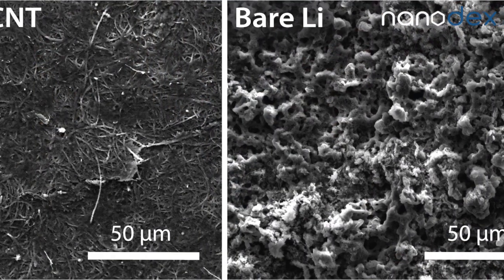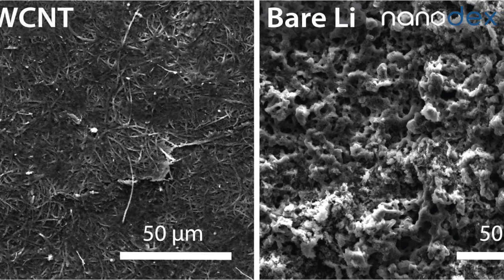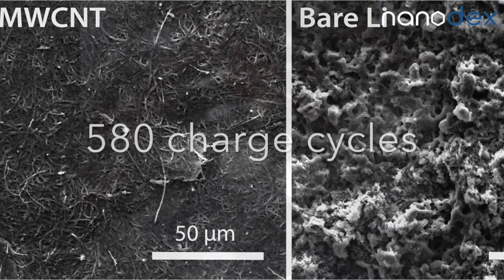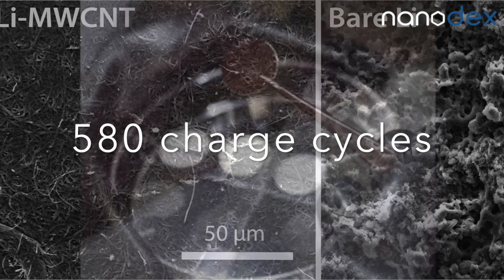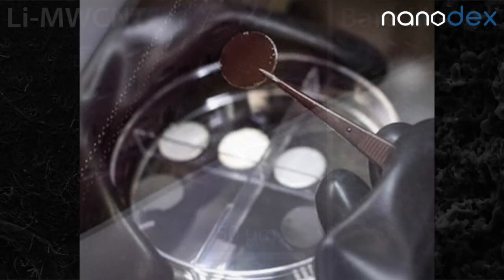The team then subjected this battery and a control battery, which did not have the nanotube film, to 580 charge cycles. Afterwards, they compared microscope images of the two batteries.